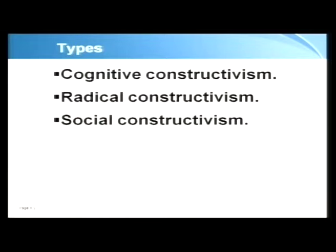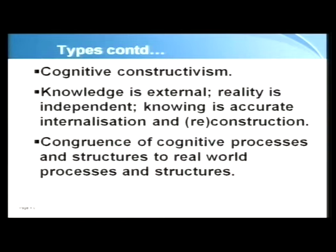There are three types of constructivism that have been distinguished: cognitive constructivism, radical constructivism, and social constructivism. First, cognitive constructivism. Cognitive constructivists believe that knowledge is certainly external, reality is independent of individuals, and therefore the process of knowing depends on how accurately that internalization of reality takes place — how accurately as an individual one could internalize that and reconstruct oneself. One's own mental structures need to be adjusted to exactly match with the reality or the knowledge that exists outside, and therefore one learns better.